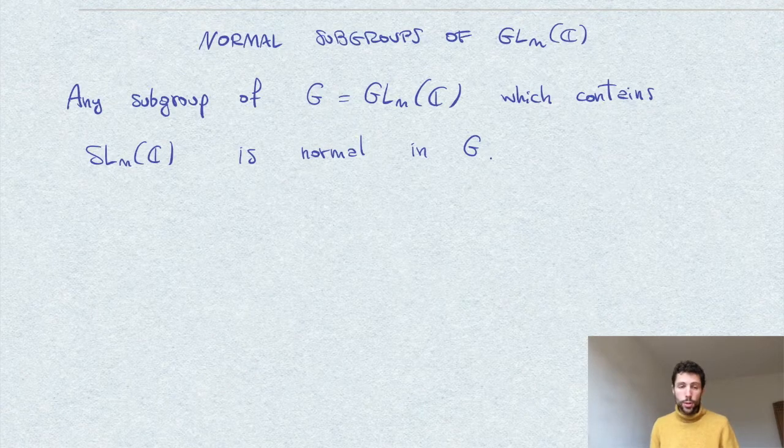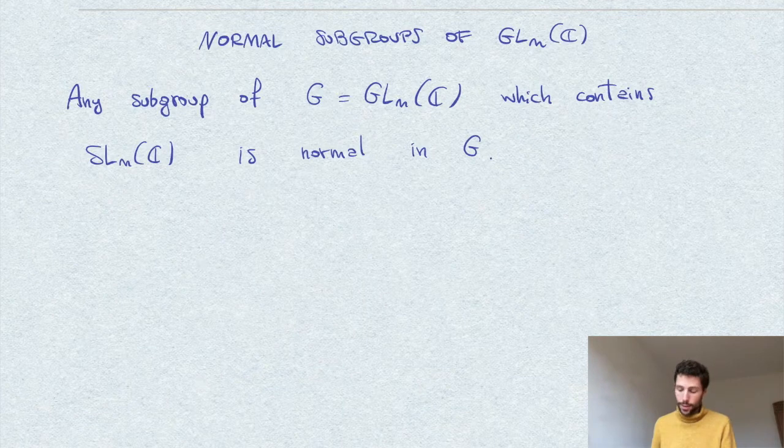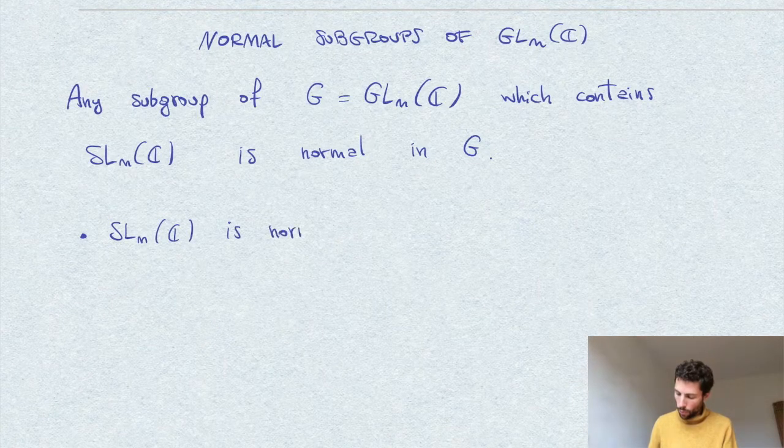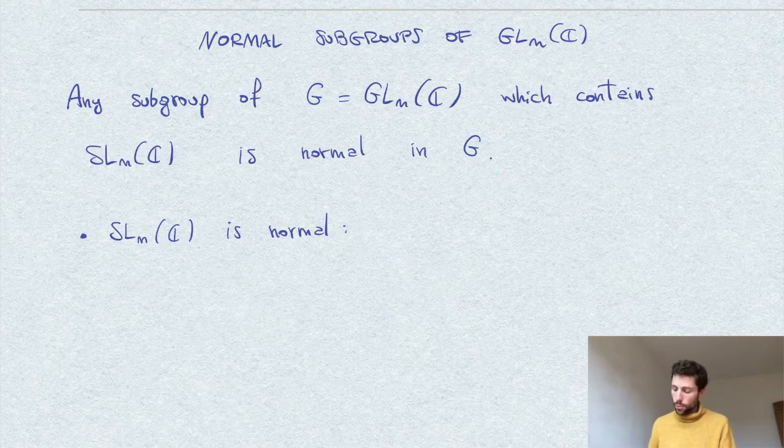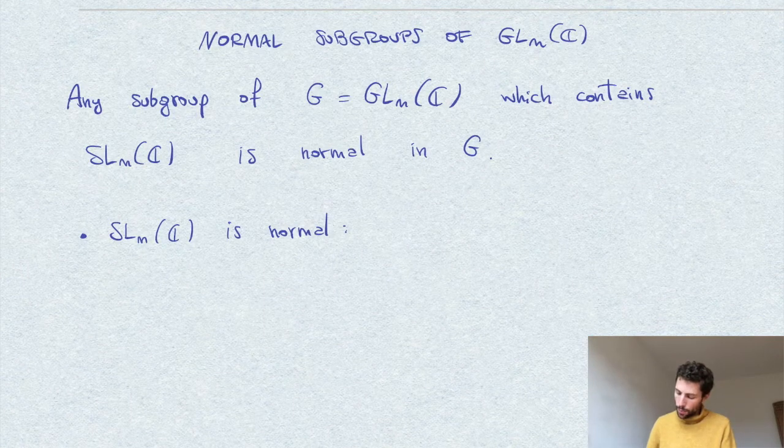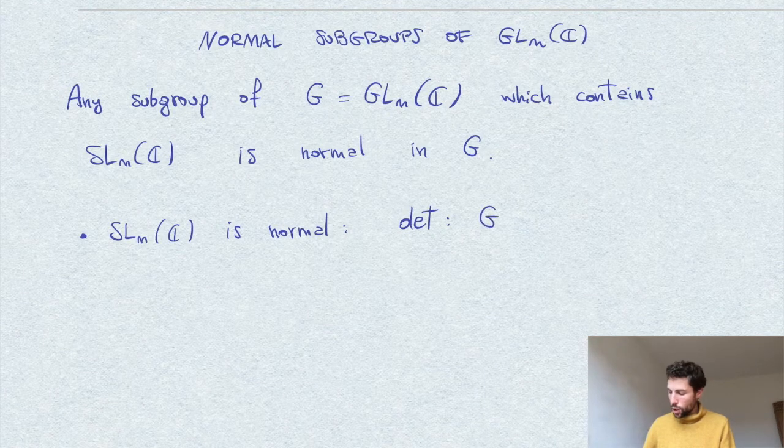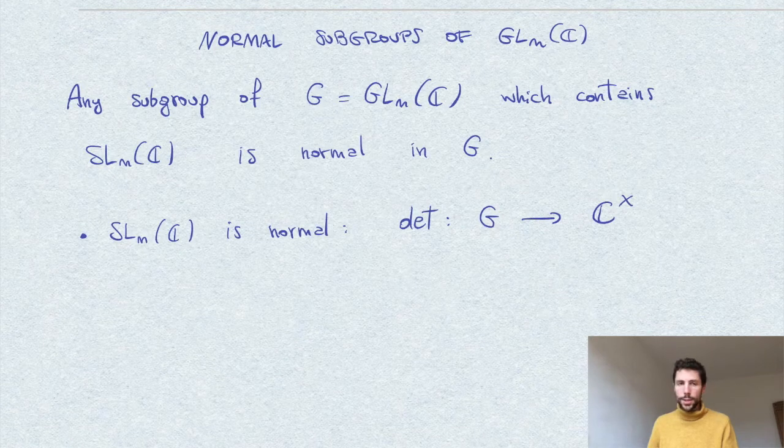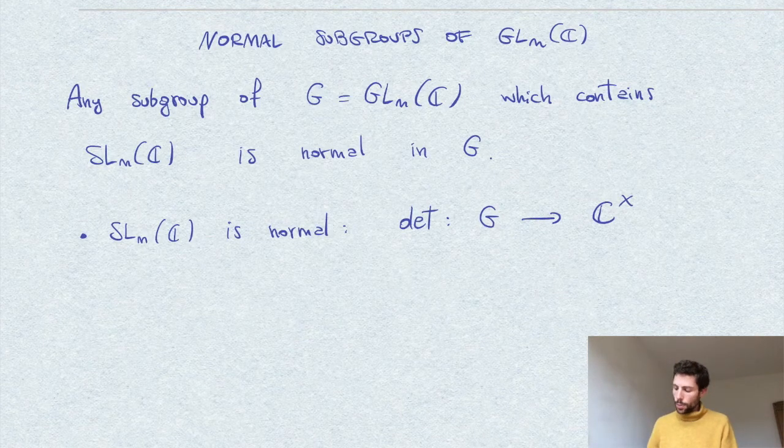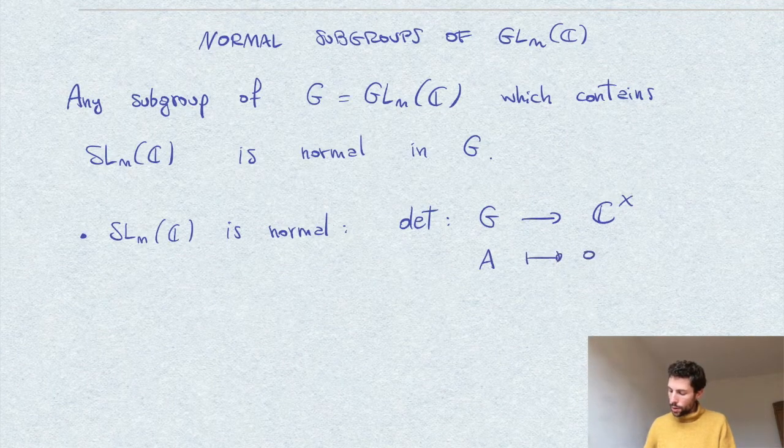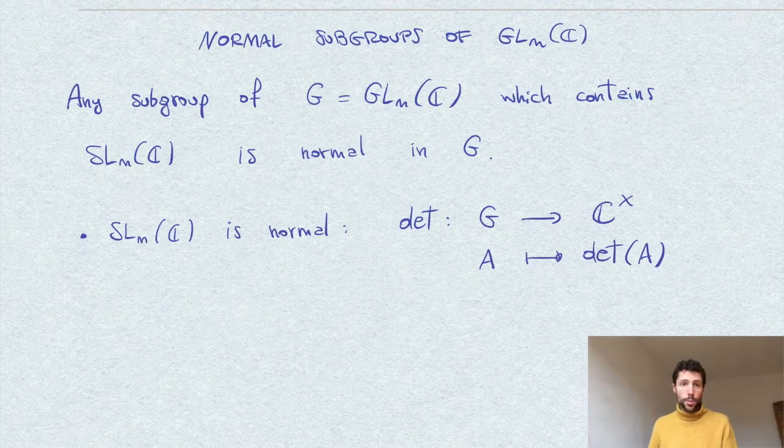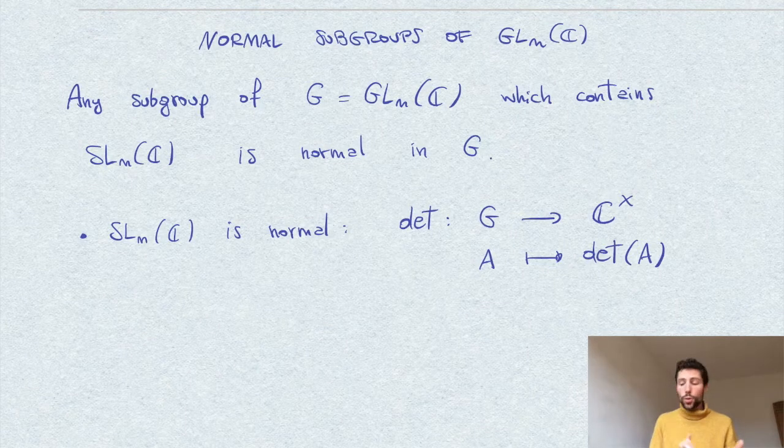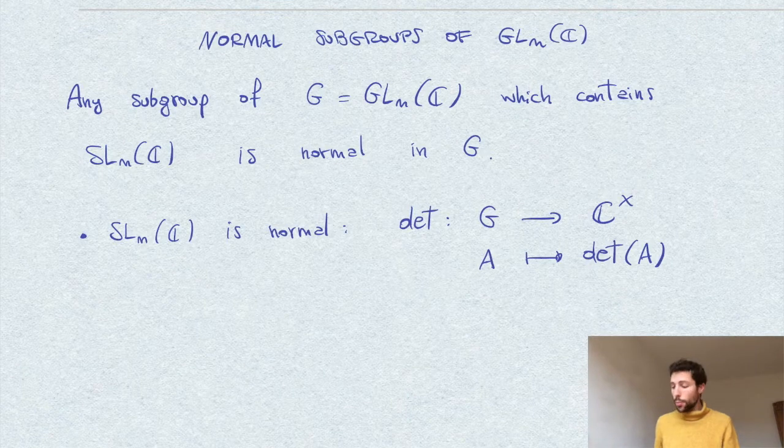Now the first thing here to notice is that of course SL_n(C) is itself normal. One way to see this very quickly is to note that the determinant map from GL_n(C), from all invertible matrices, to C star, the multiplicative group of non-zero complex numbers, that sends a matrix to its determinant. This is a homomorphism of groups, which obviously follows by Binet's formula for the determinant, namely that the product of two matrices is sent under this map into the product of their determinants.